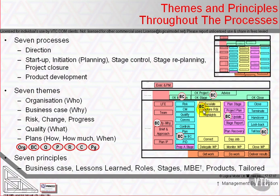At any point in time that the project encounters an unexpected event — a risk or an issue — we consider the impact of those risks and issues on the business case. And eventually, when we arrive at the end of the project, we reconsider the business case and pass on a benefits review plan that expresses how to realize the benefits.